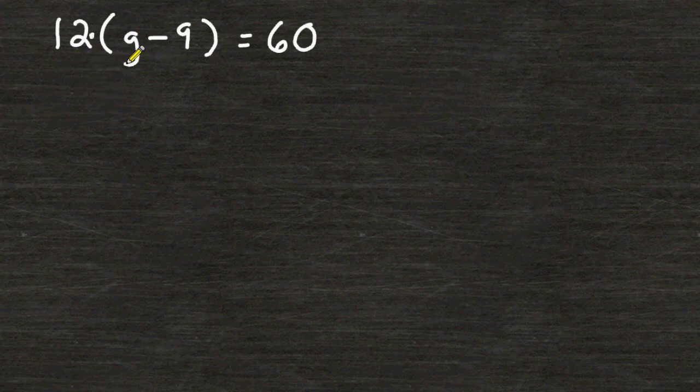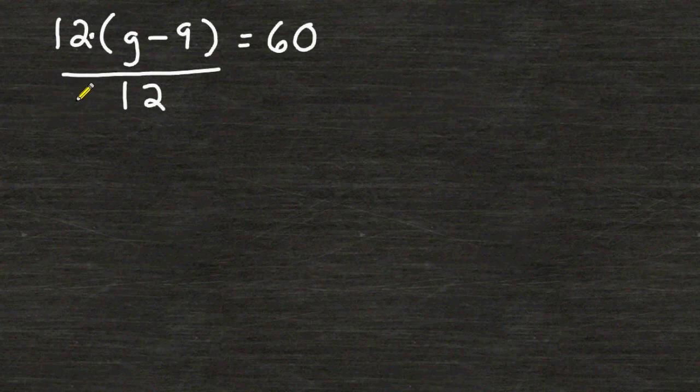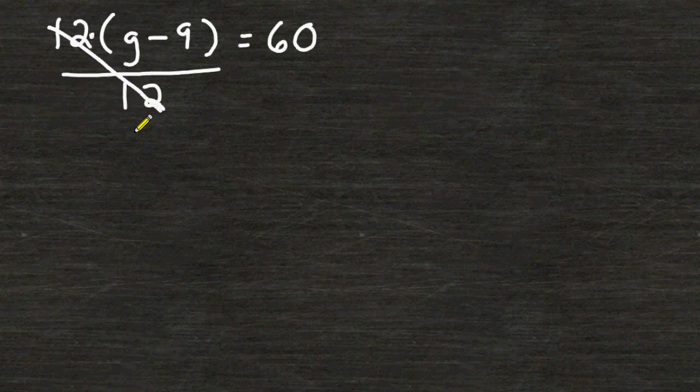Because 12 is being multiplied by the quantity inside parentheses, we can do the opposite which is to divide this whole side of our equation by 12. The reason that we can do this is because anything divided by itself is 1, therefore we can cancel out the 12's.